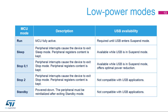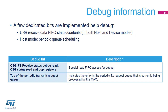The USB peripheral is fully active in run mode. After a suspend event, sleep mode and stop 0 and 1 modes are available, and the contents of its registers are kept. Stop 2 and standby modes should not be used. Within the USB mode, dedicated bits are implemented to provide some debug functions for USB applications. They relate to FIFO status and contents and the scheduling of periodic queues in host mode. Additional details of these debug bits are listed in this table.